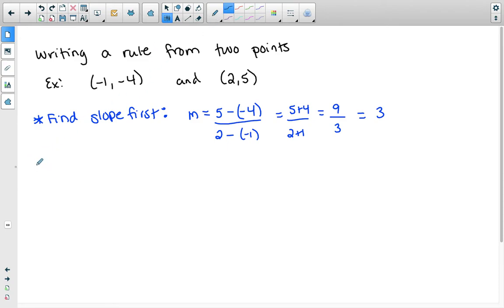Next, I want to make sure I'm using the correct form. So I'm going to write the general slope-intercept form, which is y equals mx plus b, so that I make sure that I know which form I'm using.